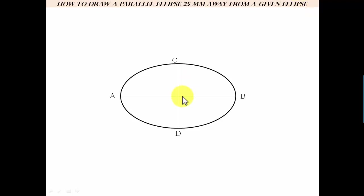What we need to do is make an ellipse 25 millimeters away. Let's assume we are creating this ellipse outside this given one.